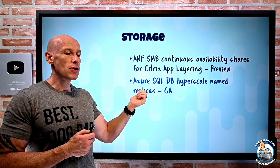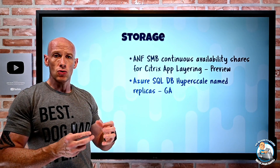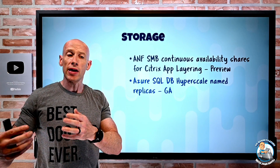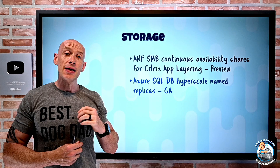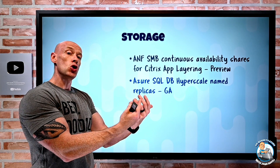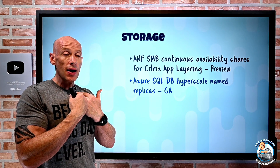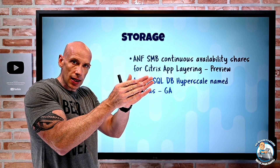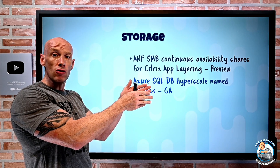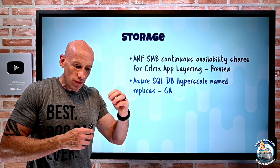Azure SQL Database Hyperscale named replicas have gone GA. Hyperscale separates out compute and page servers to give massive capacity and performance. You can have a read-write primary and multiple read replicas — up to 30 — and they can now be named read replicas. They share the same page servers behind the scenes, so the same storage, but from a compute perspective you can have different instances at different sizes. You can then direct specific application workloads to particular named read replicas — for example, targeting one for analytics and another for a different app — while the main application talks to the primary read-write replica. This helps control resource utilization and the impact of particular applications on the database.